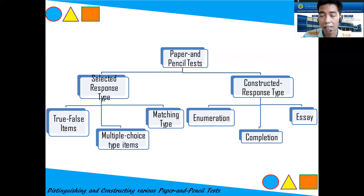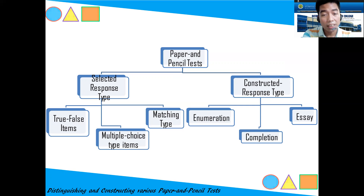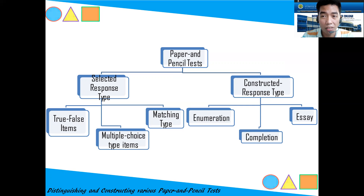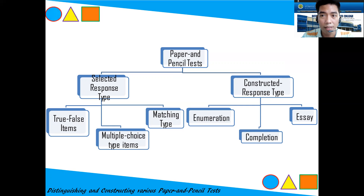On the other hand, we have the constructed response type, which includes enumeration, completion, and essay tests. In these types, there are no choices — you write your own answers. These are the paper and pencil tests we administer.